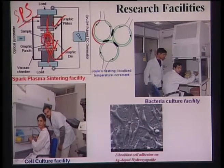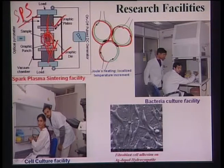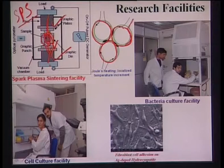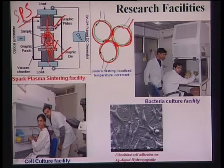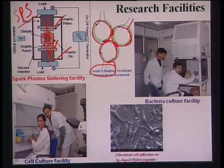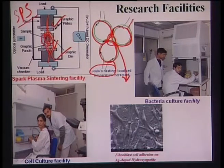It shows three particles in contact with each other and how the current passes through the powder particle surface. The spots where heating takes place are the contact spots, which offer resistance to current flow. As a result, Joule heating takes place and that leads to a large temperature increase.